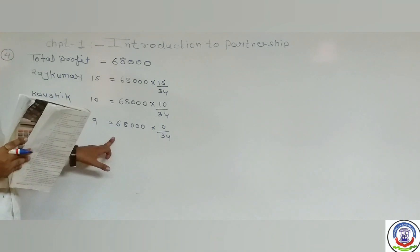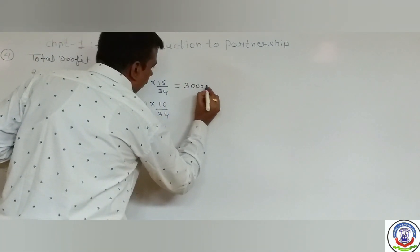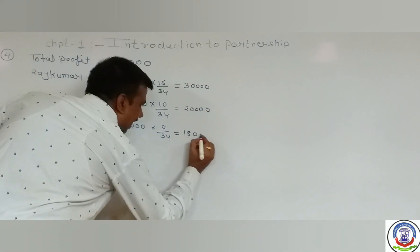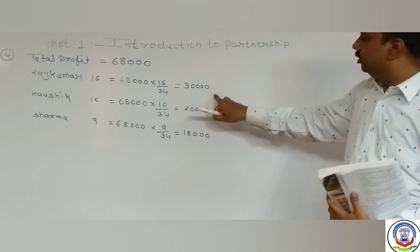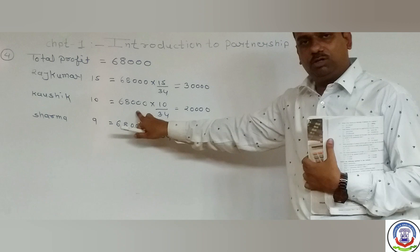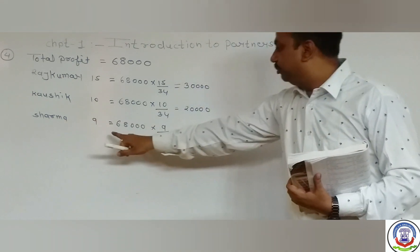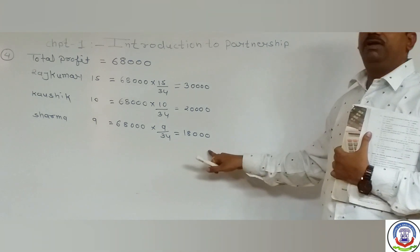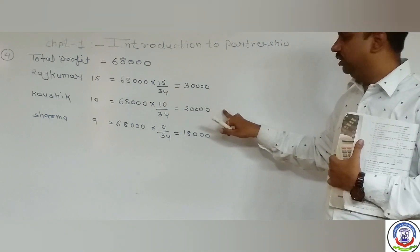As per the calculation: the first partner Rajkumar will get rupees 30,000; the second partner Kaushik will get rupees 20,000; and the third partner Sharma will get rupees 18,000. So the total profit of rupees 68,000 is distributed among the partners as 30,000, 20,000, and 18,000 respectively.